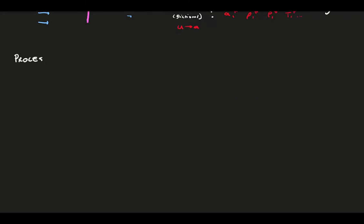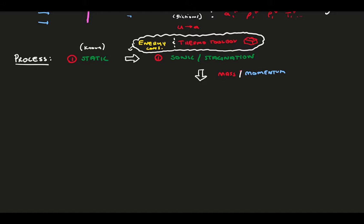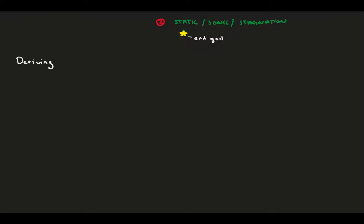Here, we will go through a process to find all of the flow variables at every point. First, we start with the static flow properties upstream of the shock wave. Then we'll use the conservation of energy equation and the thermodynamics toolbox from the last video to calculate the sonic and stagnation conditions upstream of the shock. After that, we add conservation of mass and momentum to find the static flow properties after the flow passes through the shock, and from there calculate the sonic and stagnation conditions at that location.